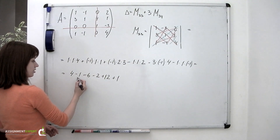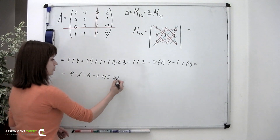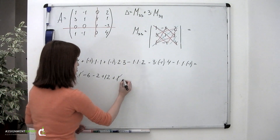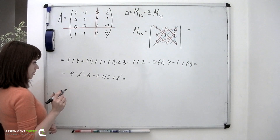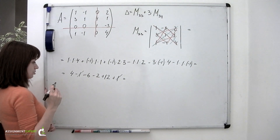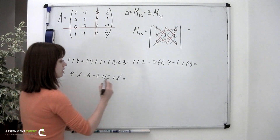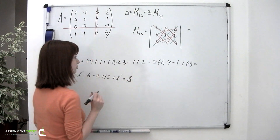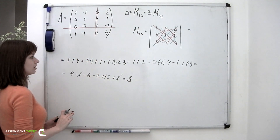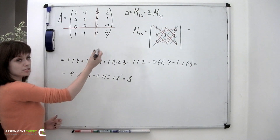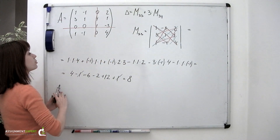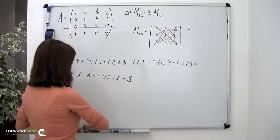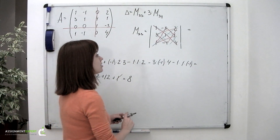These ones cancel out, and the result equals 8. So our first minor, M sub 3,3, equals 8.